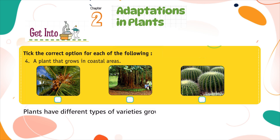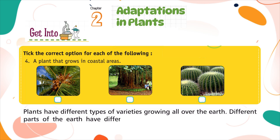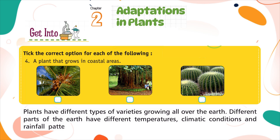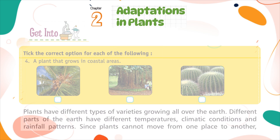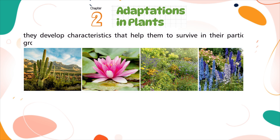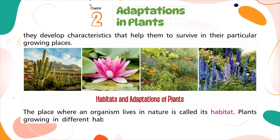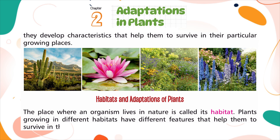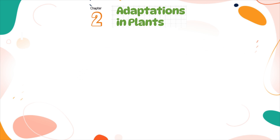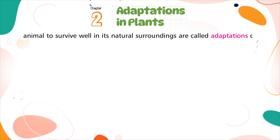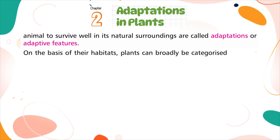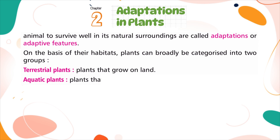Plants have different types of varieties growing all over the earth. Different parts of the earth have different temperatures, climatic conditions, and rainfall patterns. Since plants cannot move from one place to another, they develop characteristics that help them to survive in their particular growing places. The place where an organism lives in nature is called its habitat. The features that help a plant or an animal to survive well in its natural surroundings are called adaptations, or adaptive features. On the basis of their habitats, plants can broadly be categorized into two groups: terrestrial plants — plants that grow on land — and aquatic plants — plants that grow in water.